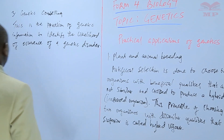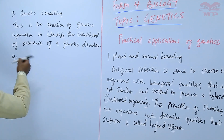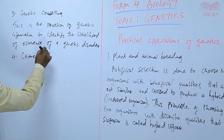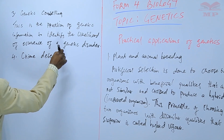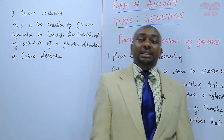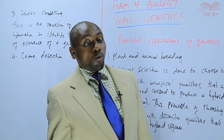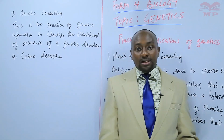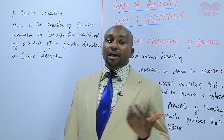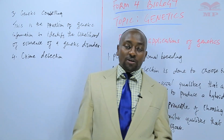Another area where genetics is applied is in crime detection. This is done through what is called DNA fingerprinting. By analyzing the fingerprints, one is able to determine whether a certain suspect is involved in a particular crime by dusting for fingerprints and then analyzing them.